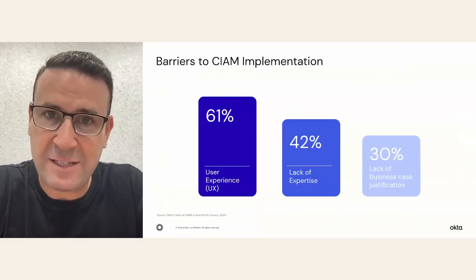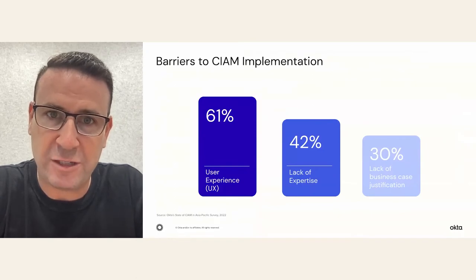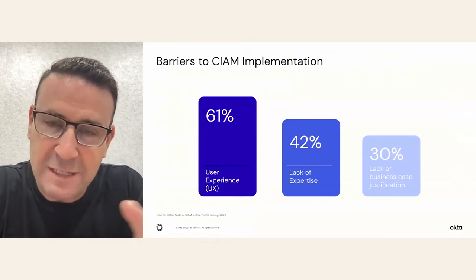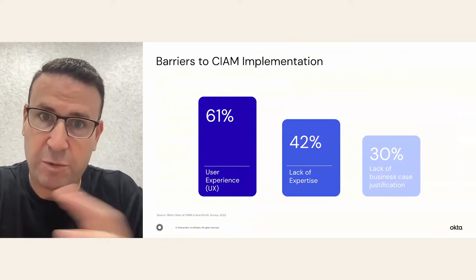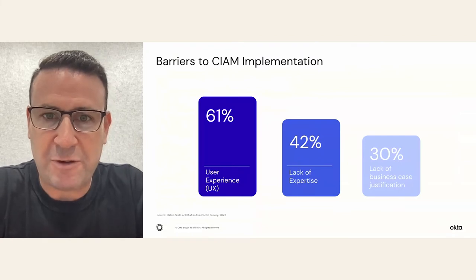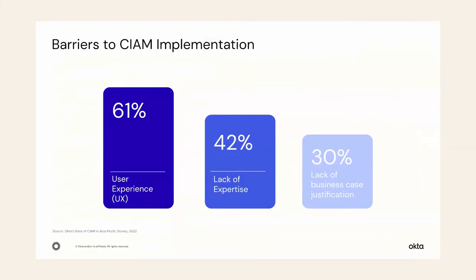Some of the biggest problems affecting the adoption of customer identity are: first, the effect on user experience — any changes are very sensitive. There's this balance between customer experience and security, which we'll talk about later. Lack of expertise is another barrier; needing high-level expertise to implement these systems often prevents organizations from adopting it. So any technology that makes it simple and easy to use is really important, as is being able to justify the business case behind it.